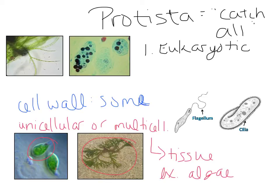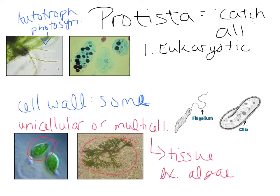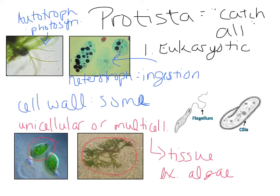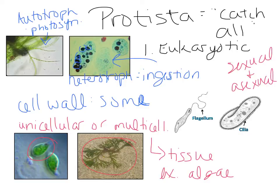There's nothing really definitive in this kingdom. When it comes to nutrition, we've got all kinds. Some are autotrophs — specifically photosynthetic autotrophs. We also have some heterotrophs, which as a general rule would be ingestion heterotrophs. So you've got both photosynthetic autotrophs and ingestion heterotrophs. For reproduction, they have both sexual and asexual reproduction, depending on the particular organism. Motility also varies — some are motile, some are not.